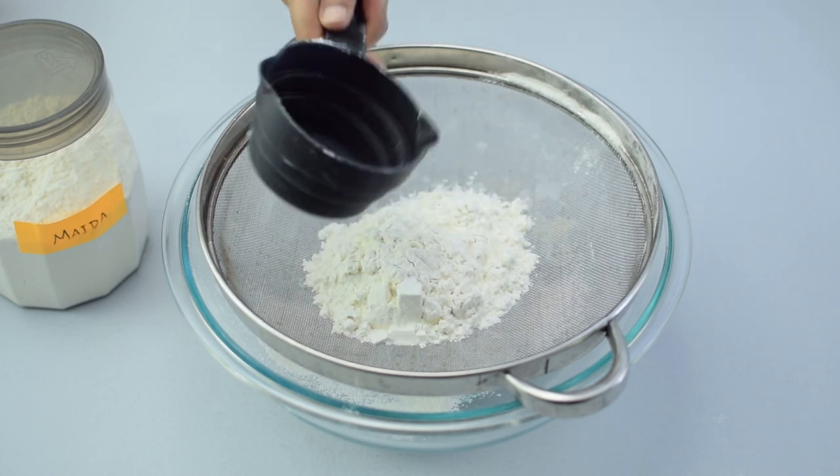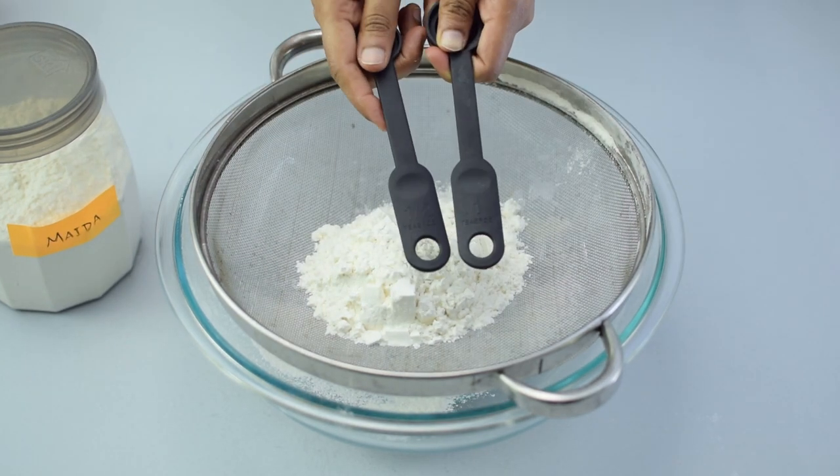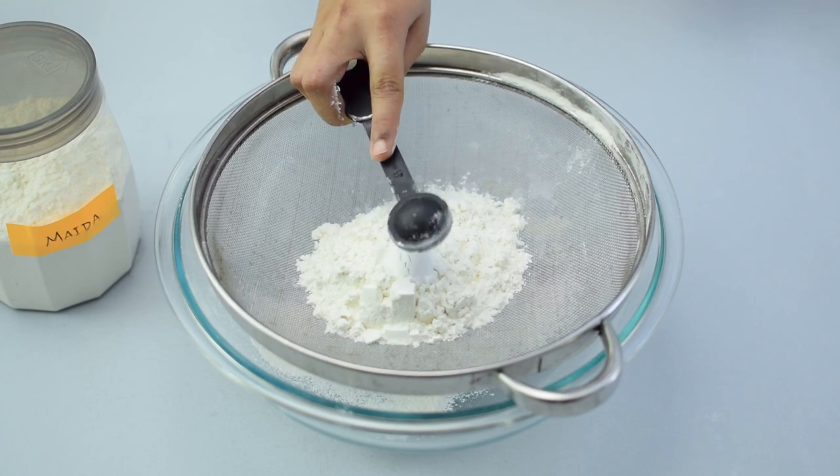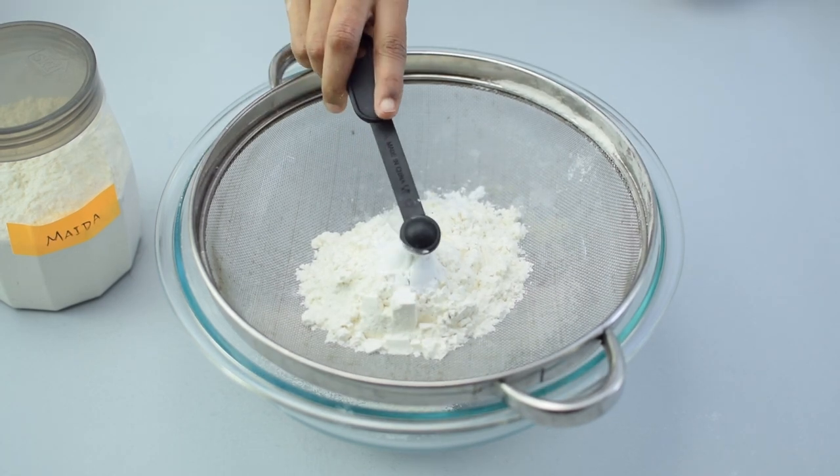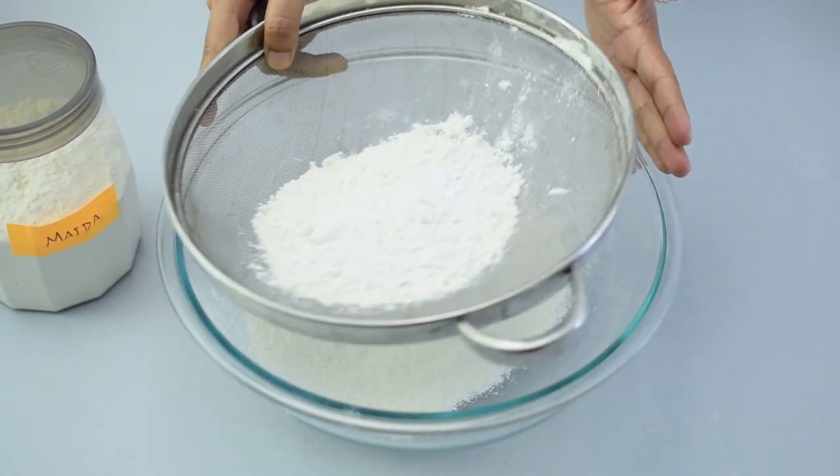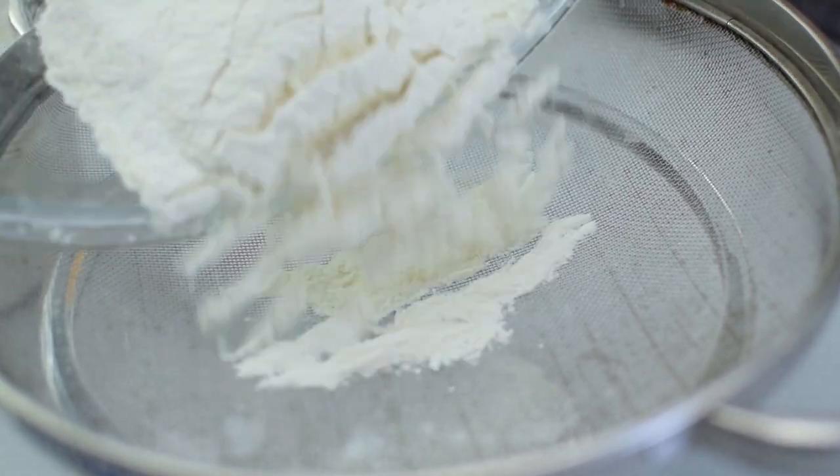Add 1 cup of maida, 1 and a half teaspoon of baking powder and a quarter teaspoon of salt. Sift the mixture twice or thrice to evenly distribute the baking powder.